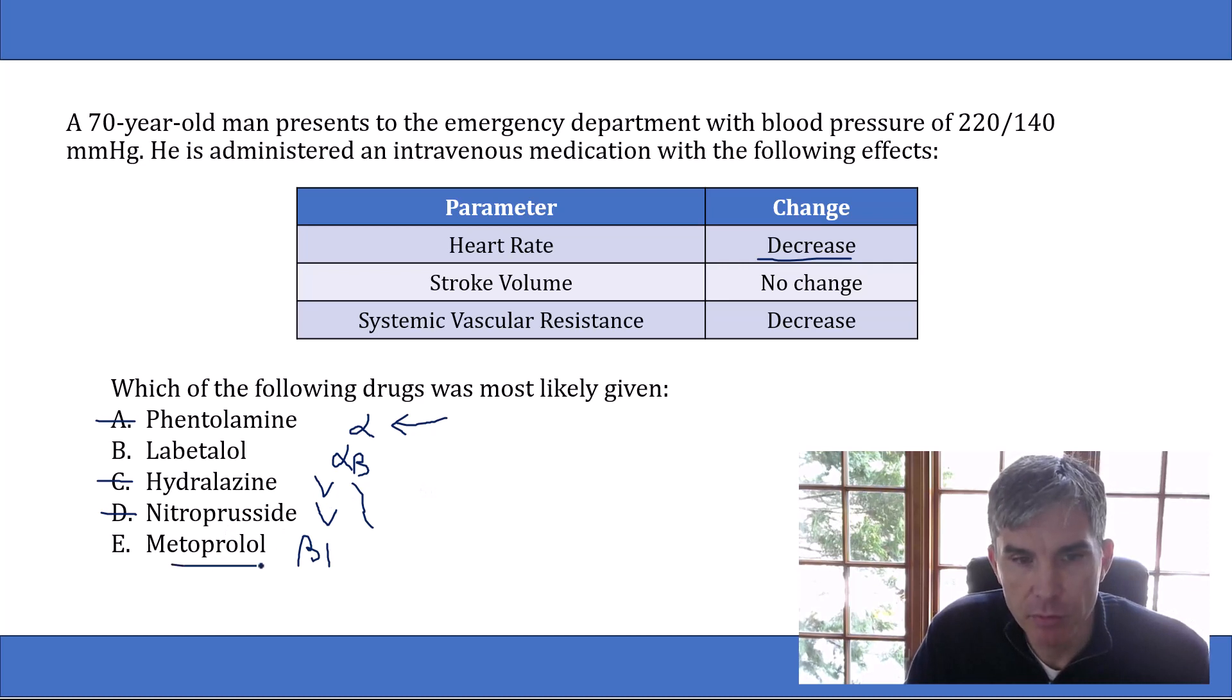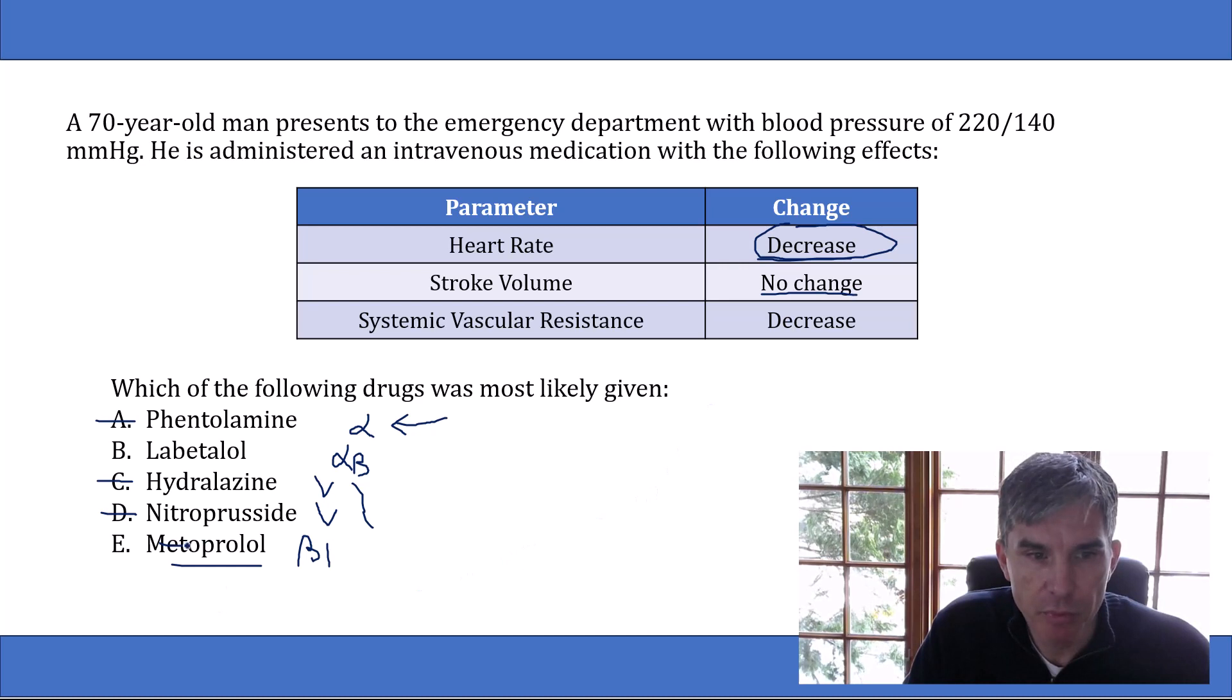And let's start by looking at metoprolol. So metoprolol is a beta-1 selective blocker. That's going to decrease heart rate. So that means it could be the answer to our question. But beta-1 receptors are also found on myocytes, and metoprolol blocks those beta receptors and decreases contractility of the left ventricle. That's going to lead to a fall in stroke volume. And the question shows that there's no change in stroke volume with the drug. So this drug can't be metoprolol because metoprolol would lower the stroke volume.